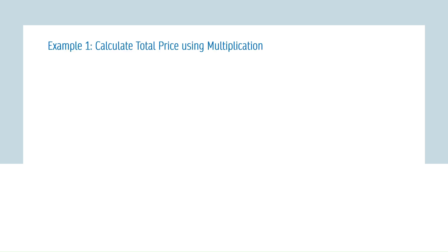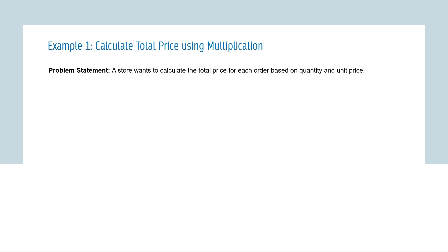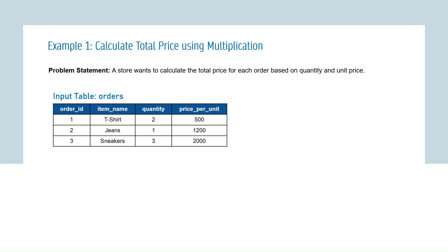Our first example is to calculate the total price using the multiplication operator. The problem statement says the store wants to calculate the total price for each order based on quantity and unit price. The input table is the orders table having four columns: order ID, item name, quantity, and price per unit. Order ID is the unique identifier, item name is what the customer purchased, quantity is the number of units, and price per unit is the price of the product per unit.